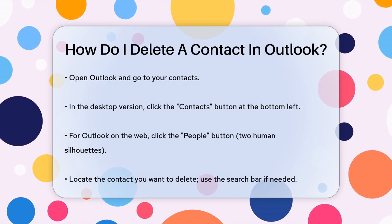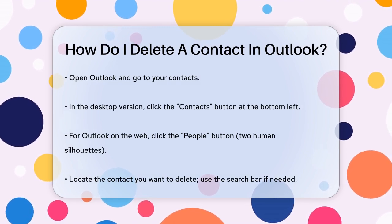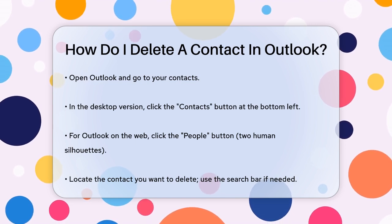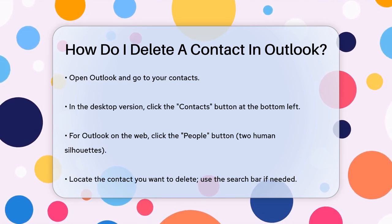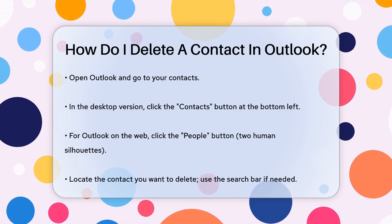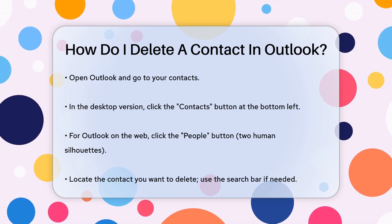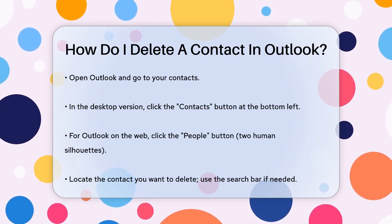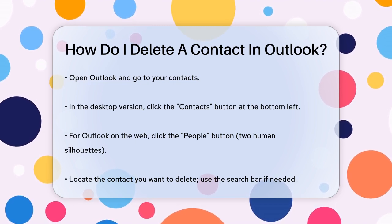First, you need to open Outlook and navigate to your contacts. In the desktop version, click the Contacts button at the bottom left of the Outlook window. If you're using Outlook on the web or Outlook.com, click the People button, which looks like two human silhouettes, usually found at the bottom of the left side navigation pane.